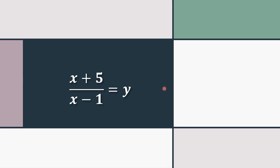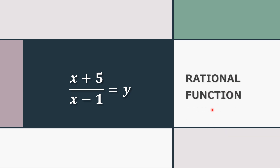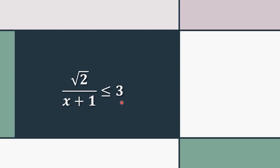We have (x + 5)/(x − 1) = y. Is it a rational equation, rational inequality, rational function, or none of these? It is a rational function — as you can see, y here serves as the function notation. Next, we have √2/(x + 1) ≤ 3. This is none of these, since we have a radical expression in the numerator, which is not a polynomial expression, so it does not fall into any of the three types of rational expression.